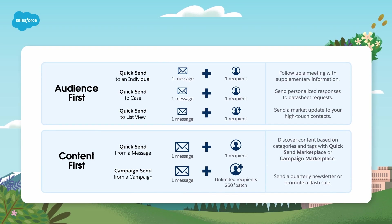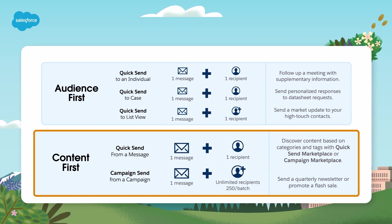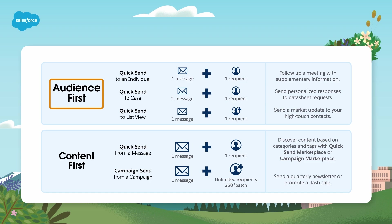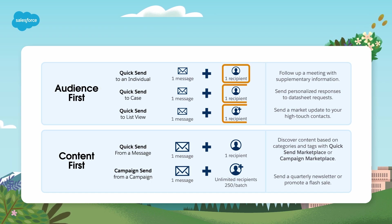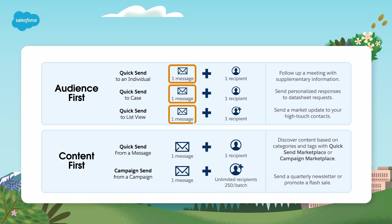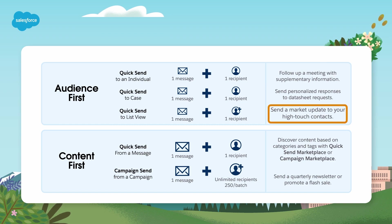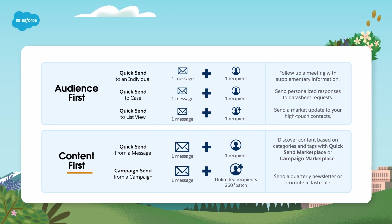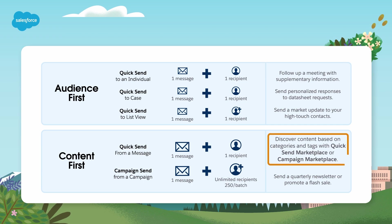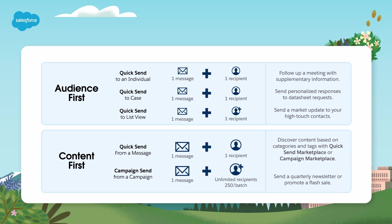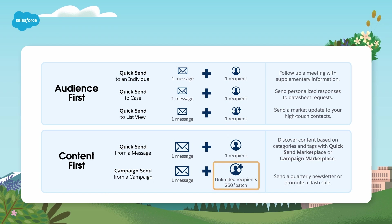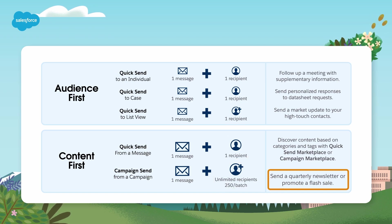The distributed marketing workflows can be thought of in two different ways – Audience First or Content First. With Audience First, your business user starts by identifying the recipient or recipients, then they find, personalize, and send branded content. For example, a follow-up to a conversation or an outreach to high-value contacts only. With Content First, your business user starts with an objective, then they search for the content that fits best, and finally they identify the recipients. For example, a quarterly newsletter or a sale promotion email.